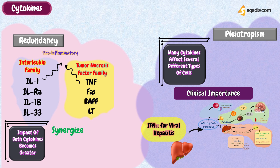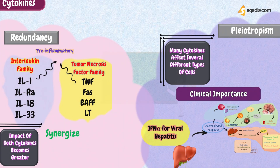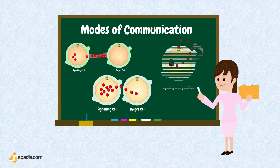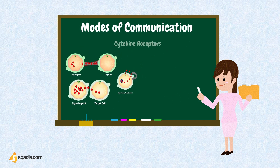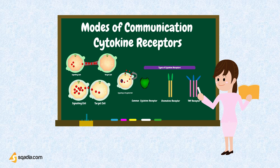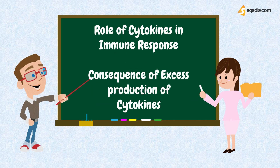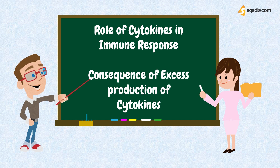So that is all about the general characteristics of cytokines. In the coming section, I will teach you about the modes of communication between the cells, cytokines, and the cytokine receptors that receive these signals. And I will walk you through the role of cytokines in the immune response, as well as what happens when there is uncontrolled activation of the immune response that results in excessive production of cytokines.